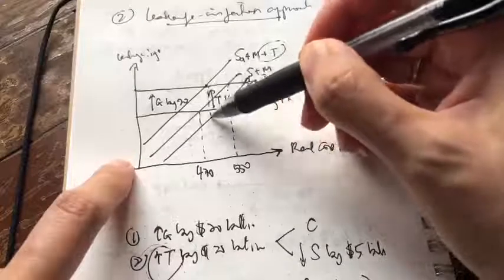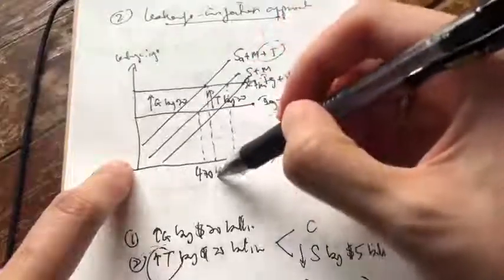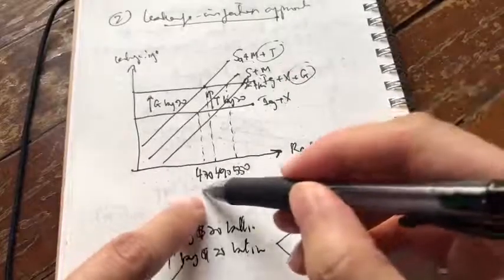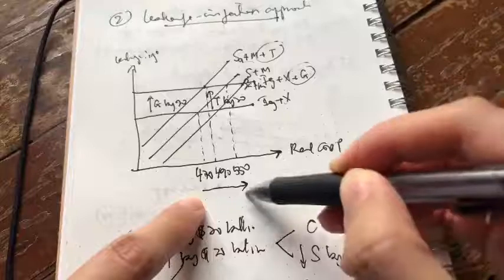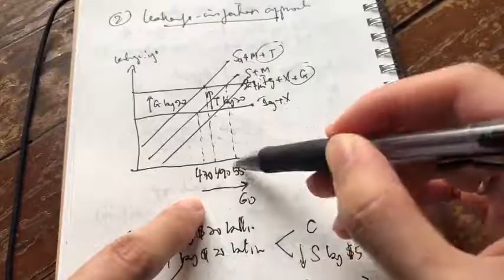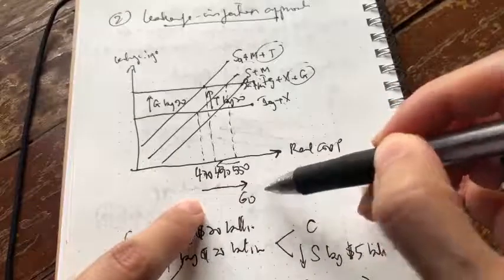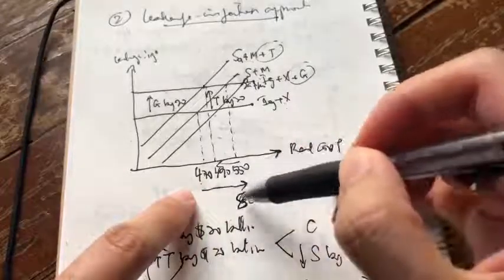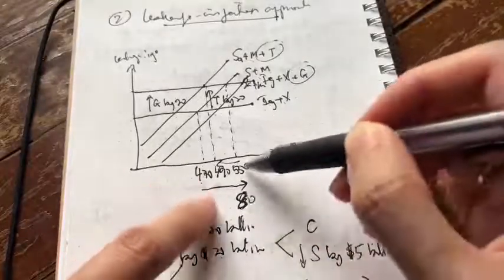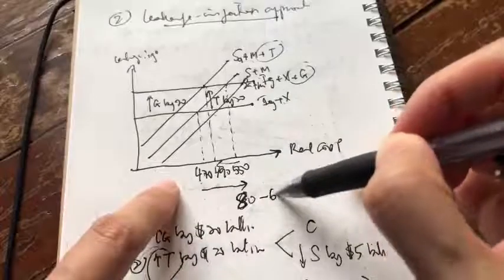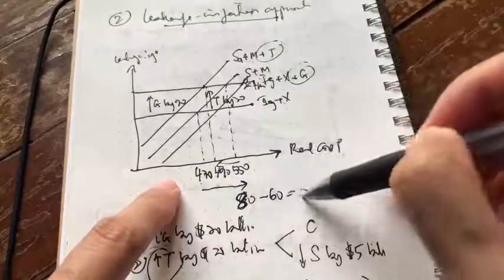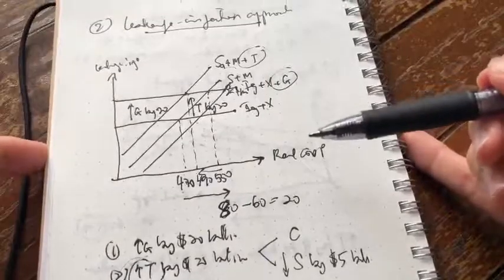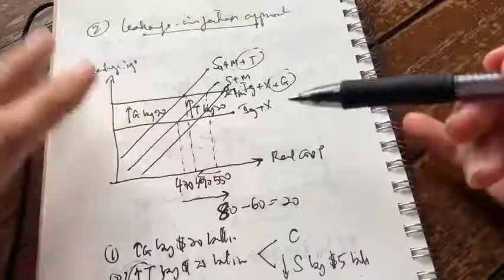Here we have a new equilibrium of 490 billion. Just like before: from 470 to 550, the change is 80 billion; from 550 to 490, the change is 60 billion; so the net effect is 20 billion. This is how you show the balanced budget multiplier using the leakage-injection approach. Given an equal change in G and T, that same amount will be the change in real GDP.